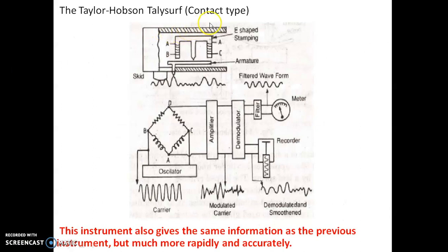The Taylor Hobson TallySurf also works on the same principle. It consists of a probe connected to the armature. When the probe containing the skid moves over the surface, it moves up and down, and the motion is converted into an electrical signal. Digital electronics techniques are used to convert this signal into the surface roughness measure.